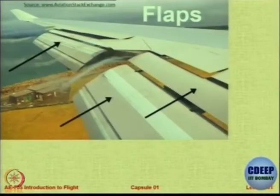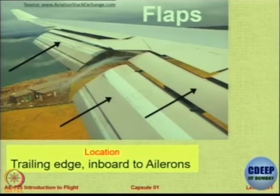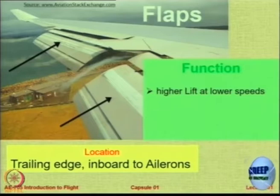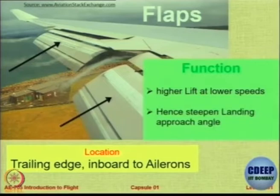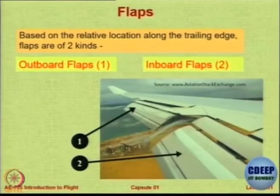Let us look at flaps — flaps are a little bit complicated in some aircraft, as you can see there are so many of them. Their location is the trailing edge, inboard of the aileron — ailerons are always outboard of the flaps. So flaps are located inboard from the ailerons, but there could be many of them. Their function is to provide higher lift at low speeds. Today your task is: where is the flap, and what is its purpose — how it works is not important right now.